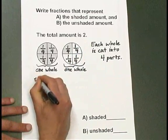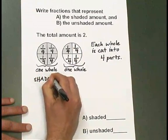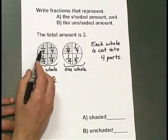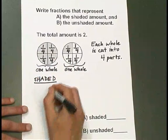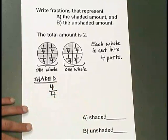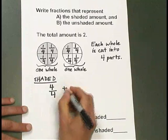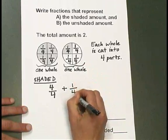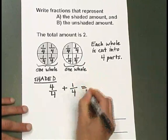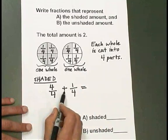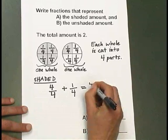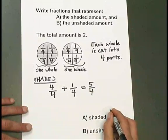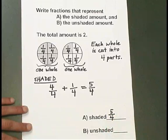Now, let's describe the shaded portion. In the first whole, there are 1, 2, 3, 4 fourths shaded. I can write that as 4 fourths, plus, in the second whole, there's just 1 fourth shaded. So altogether, shaded, I have 4 fourths plus 1 fourth more, that's 5 fourths shaded. And I can write my answer to part A as 5 fourths.